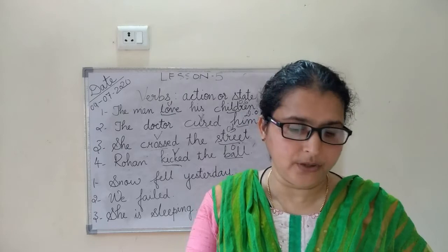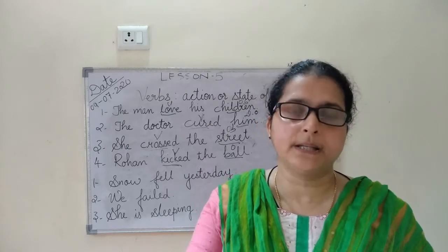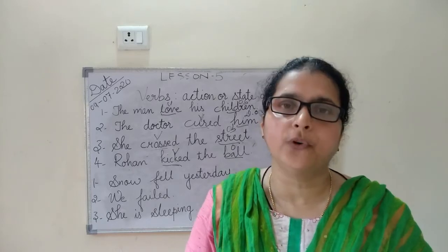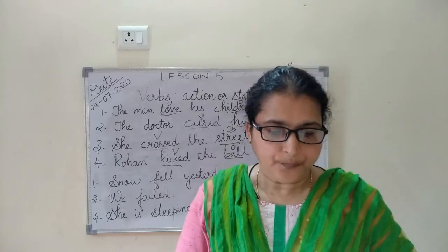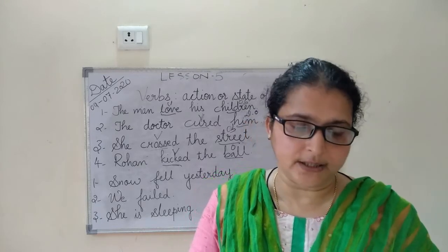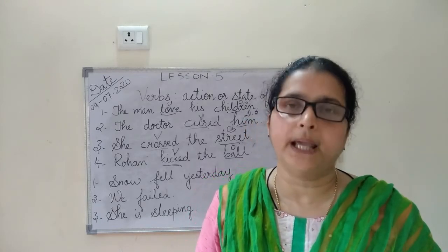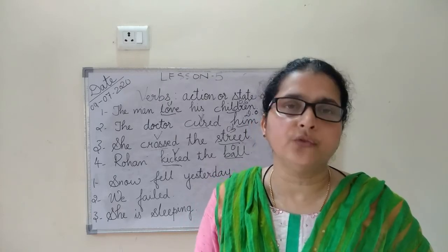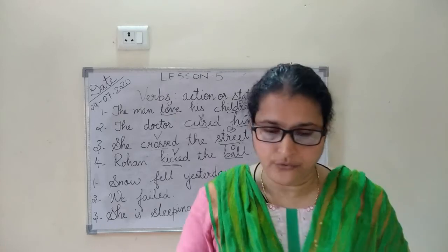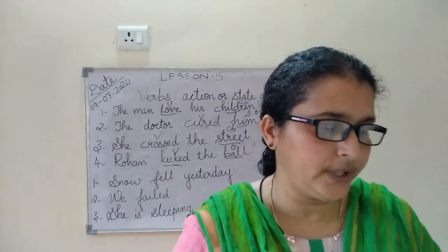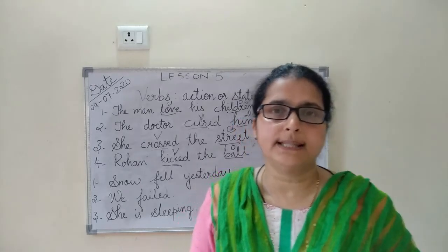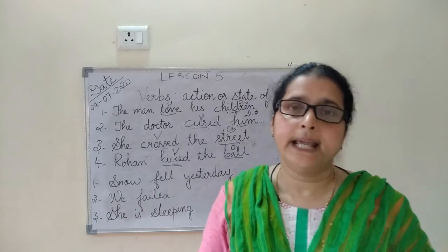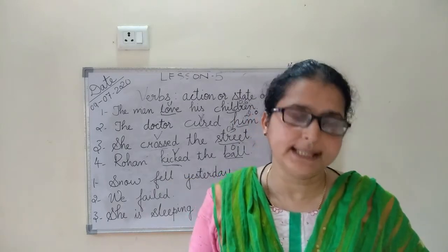You can open the textbook page number 42. There is a table here. The example given is: Sarwani gave me a bag. Gave is the verb here. A bag is the direct object, and me is the indirect object.